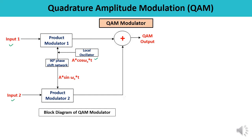There is also a local oscillator and a 90-degree phase shift network. If the local oscillator gives you A cos(ωct), then the 90-degree phase shifted network at its output gives you A sin(ωct). There are two sections: the upper section and the lower section. In the upper section, there is a product modulator one and the local oscillator — this is known as the in-phase channel.